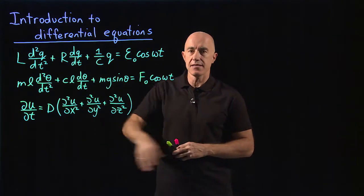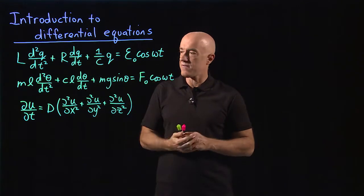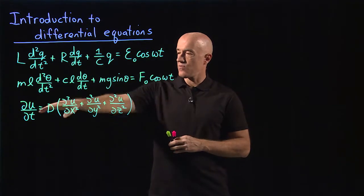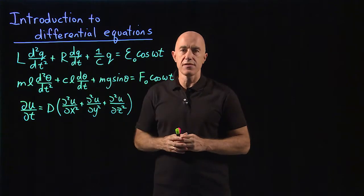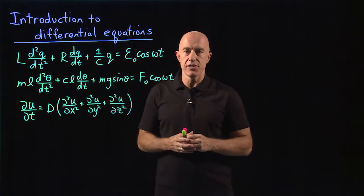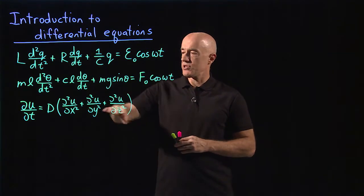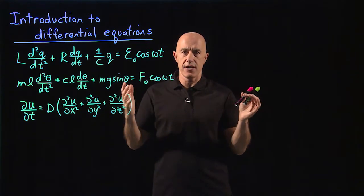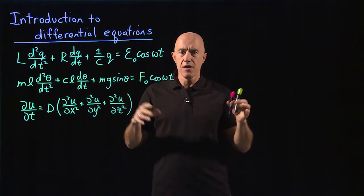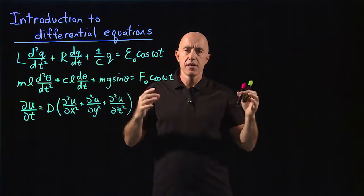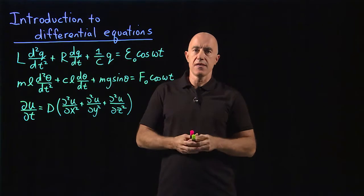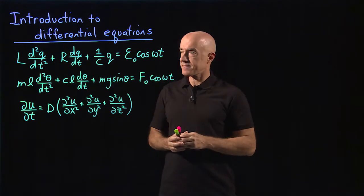A mass that is oscillating back and forth. And the third one is the diffusion equation, which governs the motion of, say, pollution dispersing in the air.